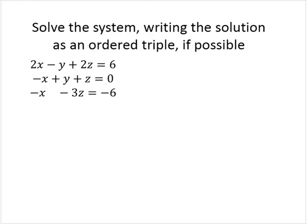Solve the system, writing the solution as an ordered triple if possible. I have the system 2x minus y plus 2z equals 6, negative x plus y plus z equals 0, and negative x minus 3z equals negative 6.